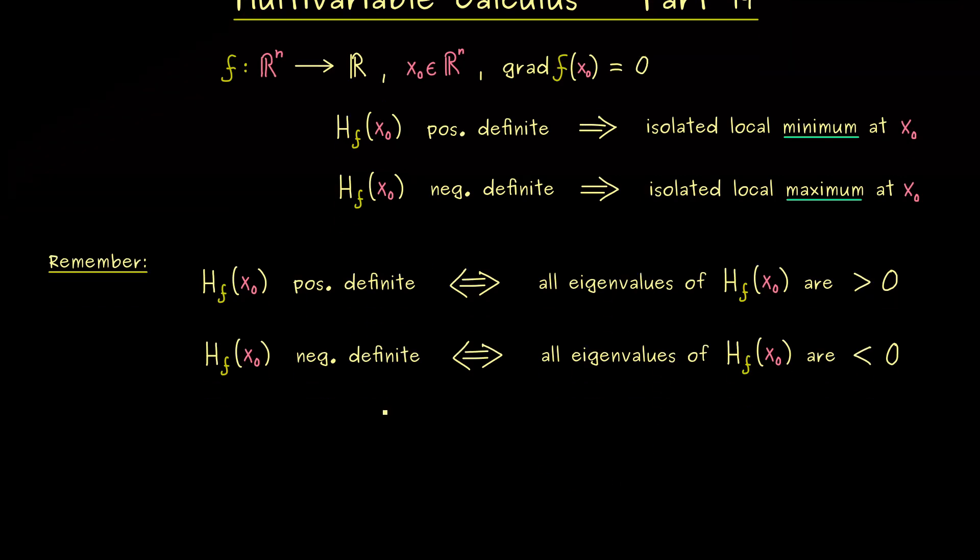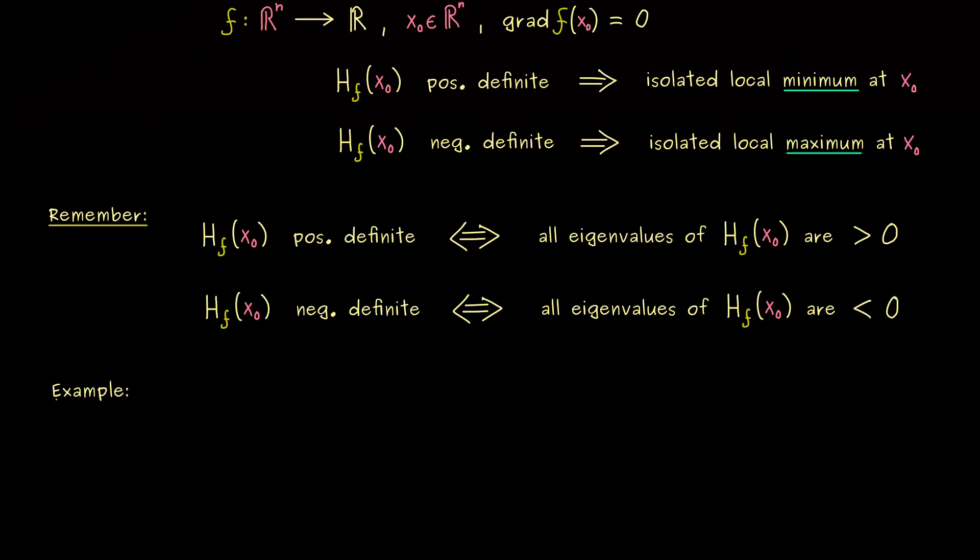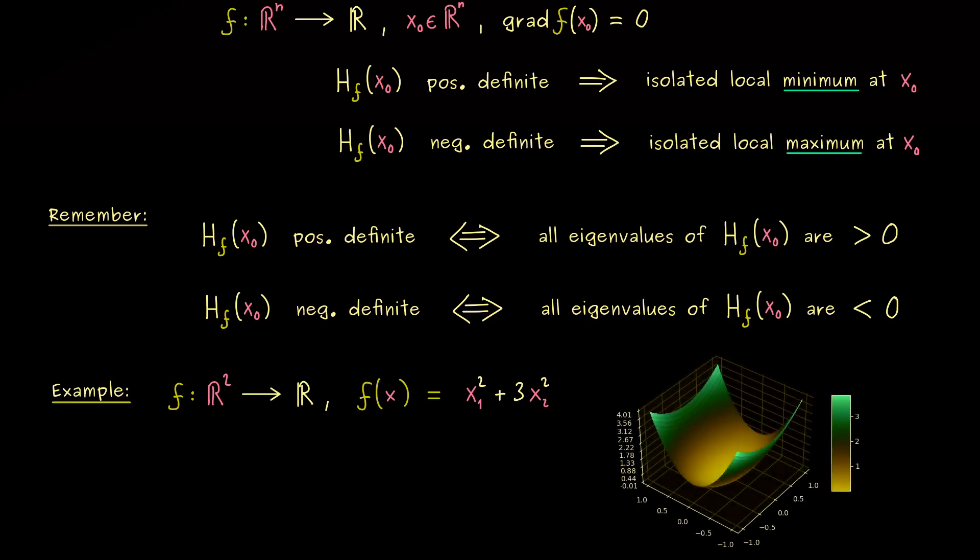And that's what we will now do in an example. And as always I want to keep it simple so we choose a two dimensional one. So it should be a function f defined on R² which means it gets two inputs. And as always we put that into a vector x with two components x₁ and x₂. And then I want to have x₁² plus 3 times x₂². So this is our function here and I would say to visualize it let's simply plot it and as always let's use Python for that.